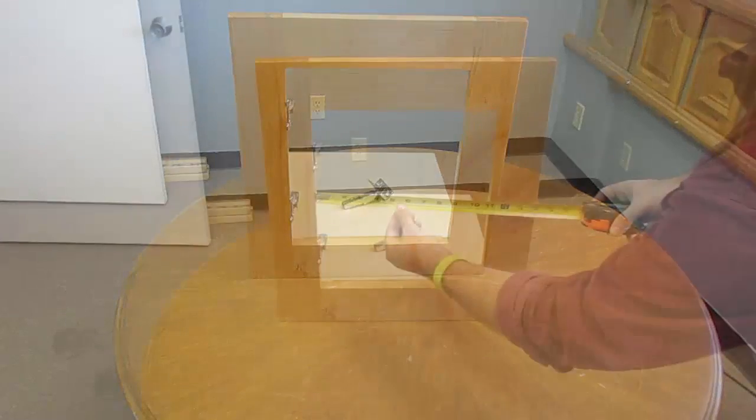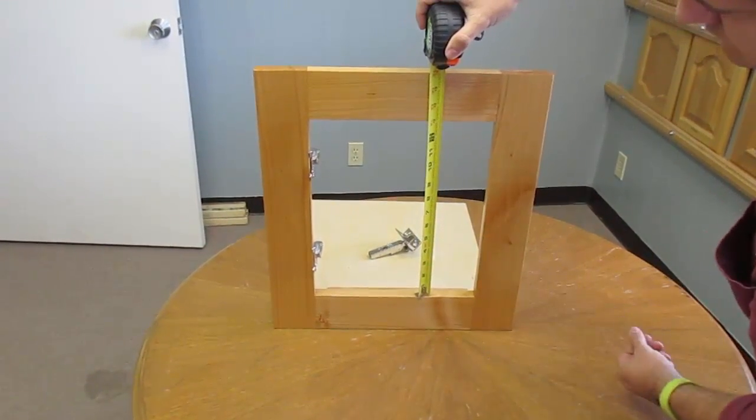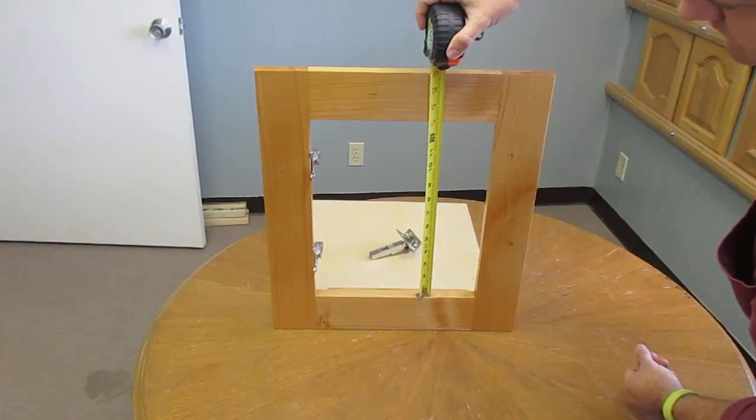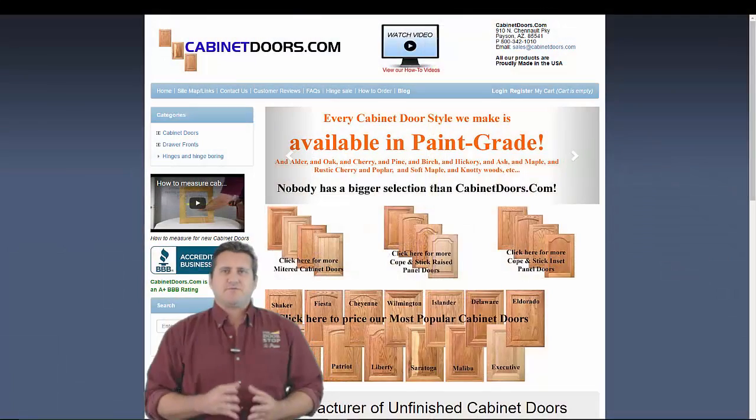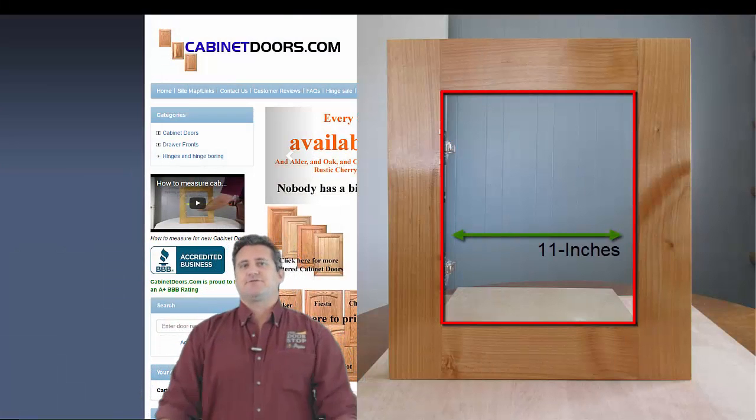Now we'll start with a single door, measuring the width and height of the cabinet opening. The video shows this process. In the case of our face frame, the opening width is 11 inches and the height is 13 inches.